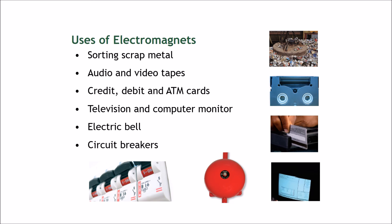Some uses of electromagnets include sorting scrap metal — the electromagnet finds metal parts, separates them from other debris, and leaves them to be recycled. They are also used to create audio and video tapes, and in credit, debit, and ATM cards — never put your ATM card next to a strong magnet as it would erase the magnetic tape. Other uses include televisions, computer monitors, electric bells, and circuit breakers.